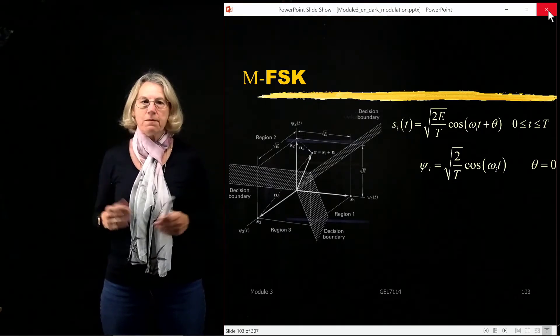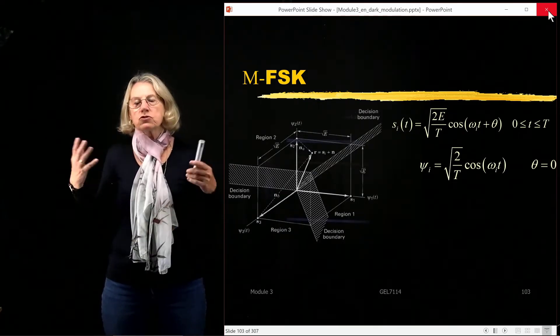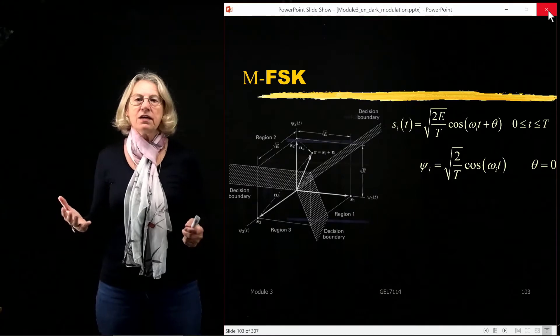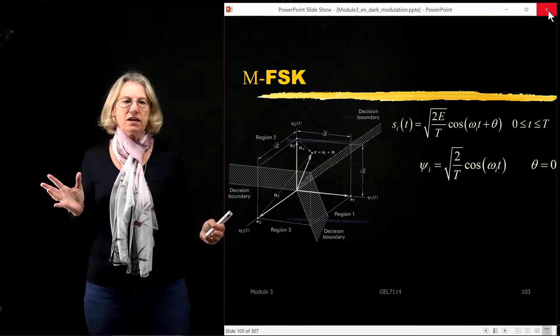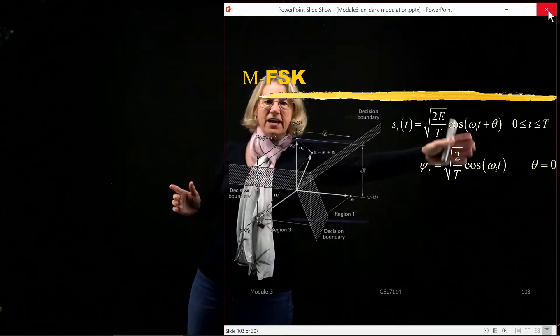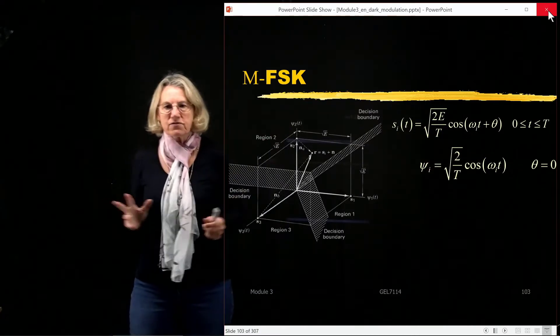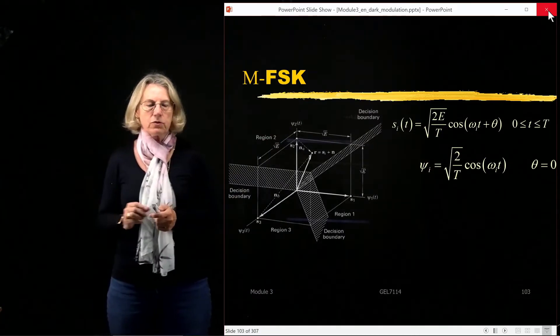A symbol is a basis vector. We're talking about coherent detection in the signal space and we assume that this phase, we've set it to zero without loss of generality because we could always rotate it.